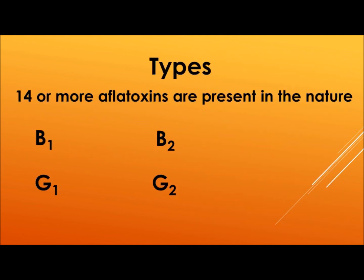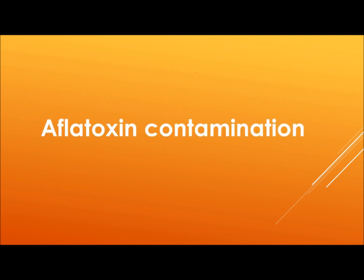There are around 14 or more Aflatoxins present in nature. Among them, B1, B2, G1 and G2 are the most dangerous types of Aflatoxin.